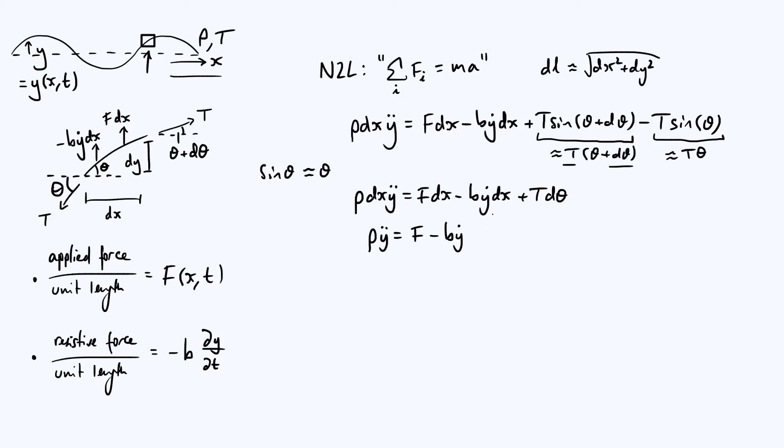Because these are infinitesimally small quantities, as we take the limit, as all your differentials go to zero, the final term is going to become a derivative. So it's T d theta by dx. I'm writing that as a partial derivative because this whole situation is changing in time as well.